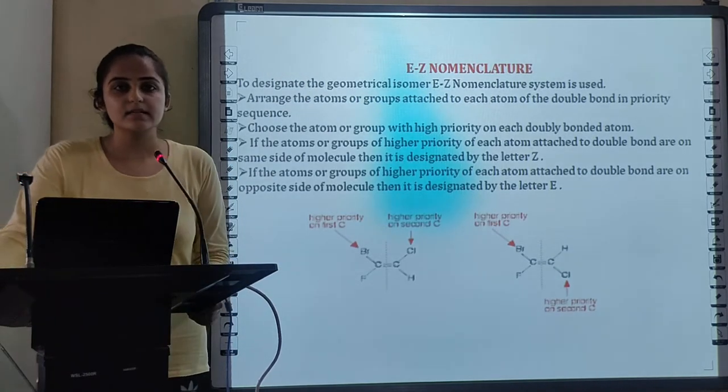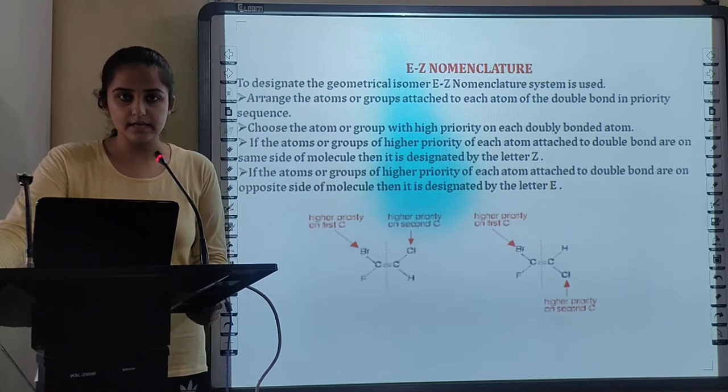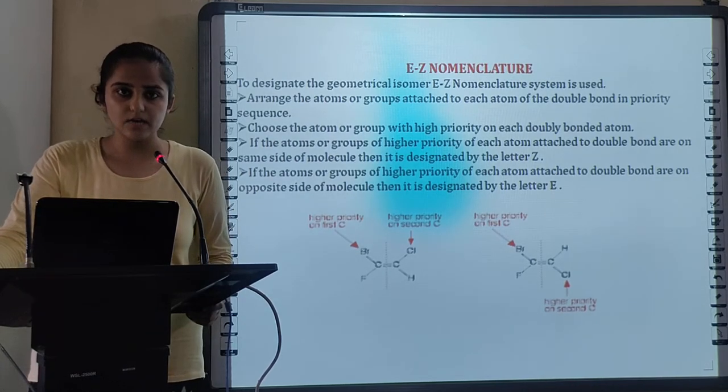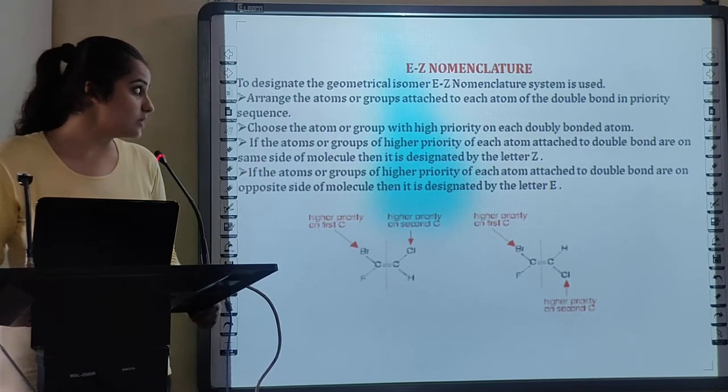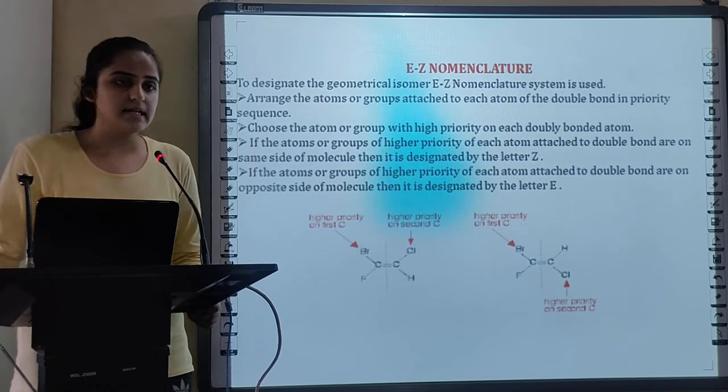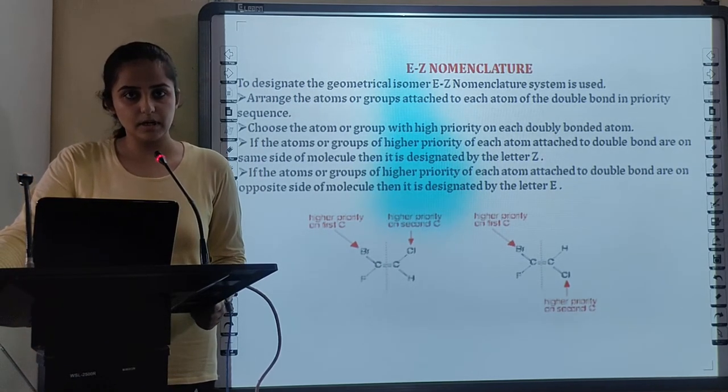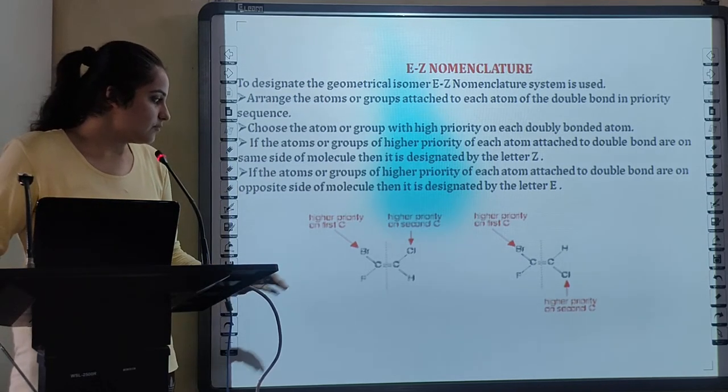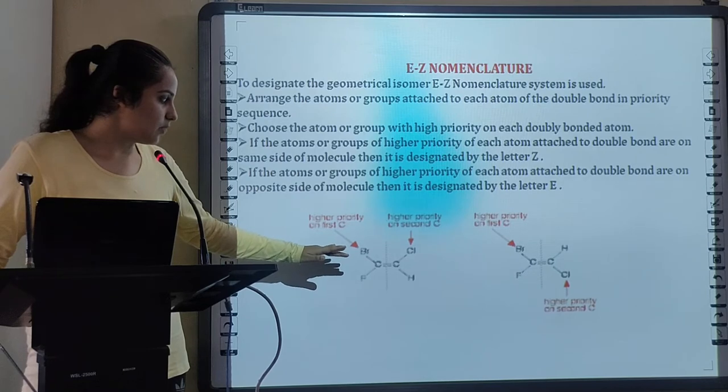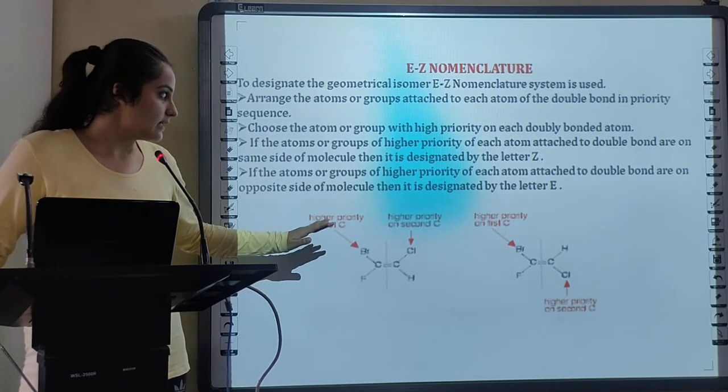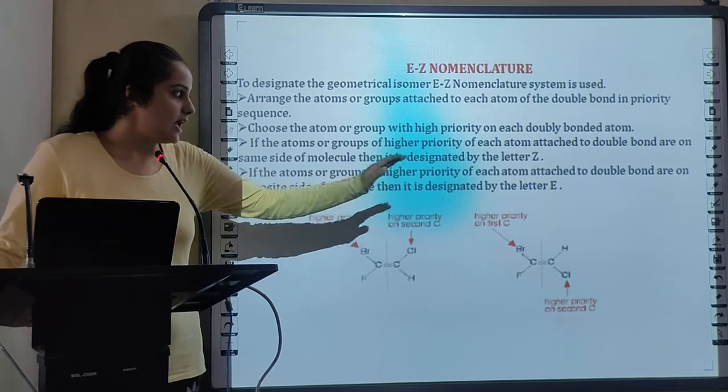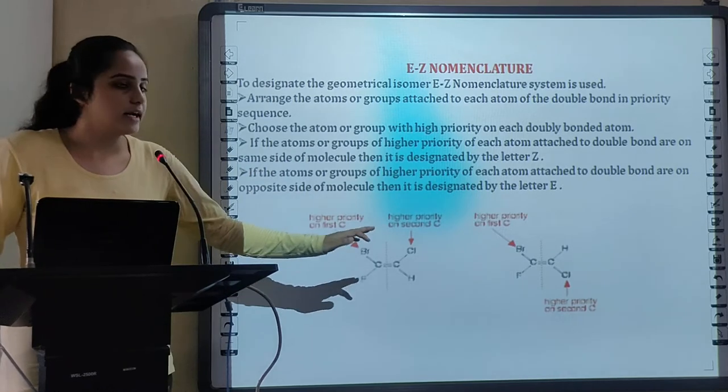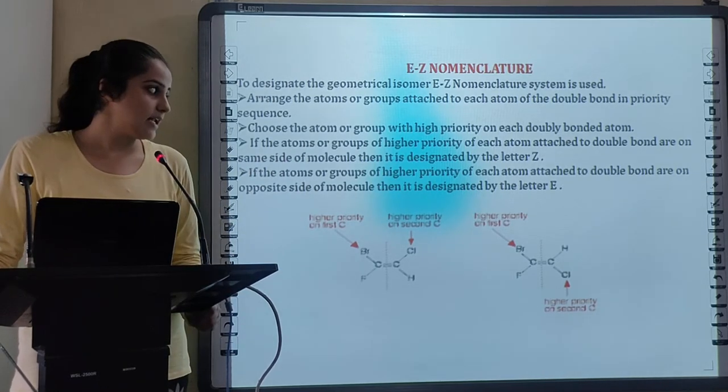As I said that cis-trans nomenclature is not used to designate or specify all geometrical isomers. Now, we use E-Z nomenclature. In E-Z nomenclature, priority is given to the atom or group with highest atomic number. So, the higher priority atoms or groups, if present on the same side of the double bond, that is C double bond C, they are designated by letter Z and if they are present on either side of the double bond, they are designated by letter E.